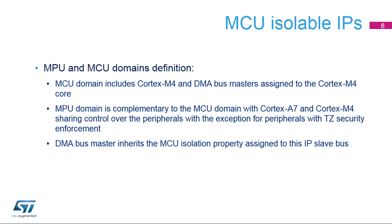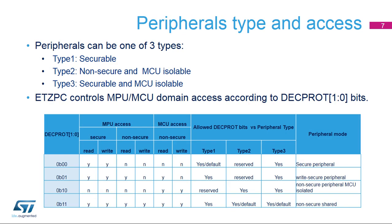MPU and MCU Domain Definition: The MCU domain includes Cortex-M4 and DMA busmasters assigned to the Cortex-M4 core. The MPU domain is complementary to the MCU domain with Cortex-A7 and Cortex-M4 shared control, with the exception of peripherals with TZ security enforcement. The DMA busmaster inherits the MCU isolation property assigned to its IP slave bus. Peripherals can be one of three types: Type 1 — securable; Type 2 — non-securable and MCU isolable; Type 3 — securable and MCU isolable.